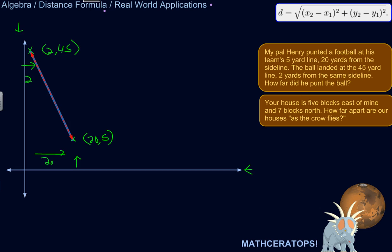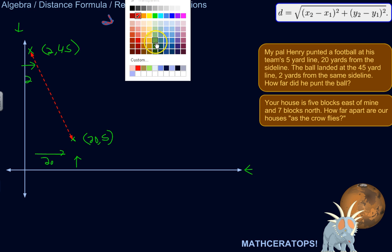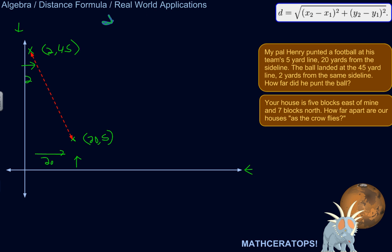So we can just use the distance formula here. Distance is equal to the square root. We have to decide what we're going to call 1 and what we're going to call 2. This is where he kicked the ball. So let's call this 1. That's where it landed. So let's call that 2.